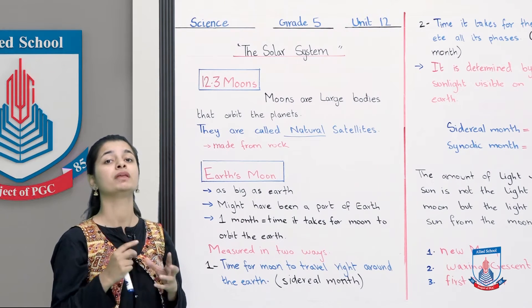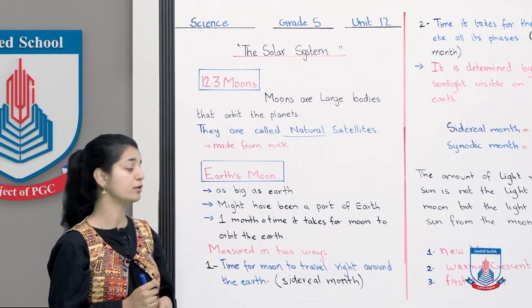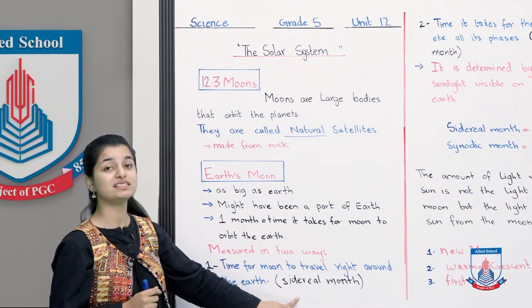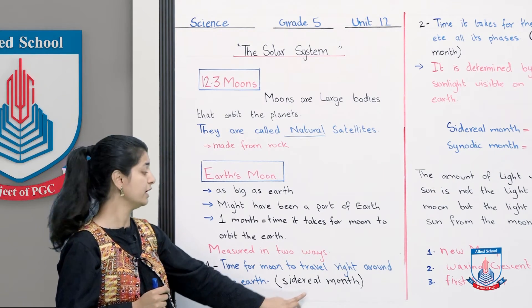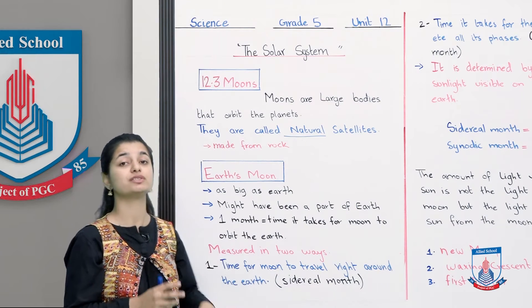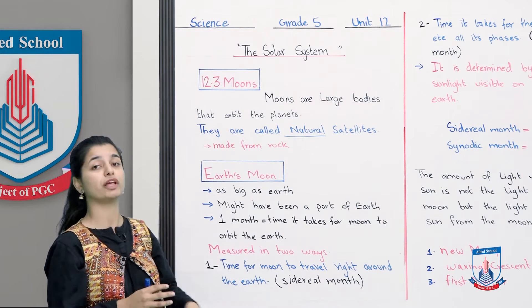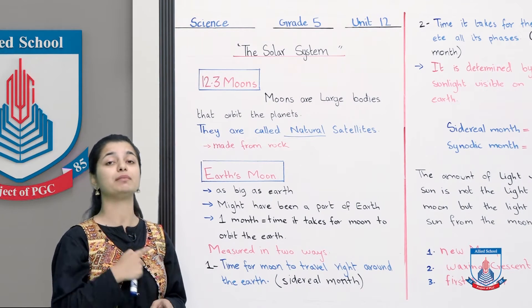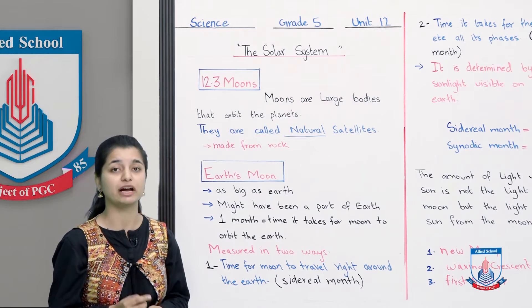Yani seedha ghoomte hue earth ko cover karne mein usko kitna time lagta hai, aur is tariqe ka hum kehte hai sidereal method. So sidereal method jo hota hai, usme hum dekhte hai kitna time lag raha hai earth ke girth jaane mein.